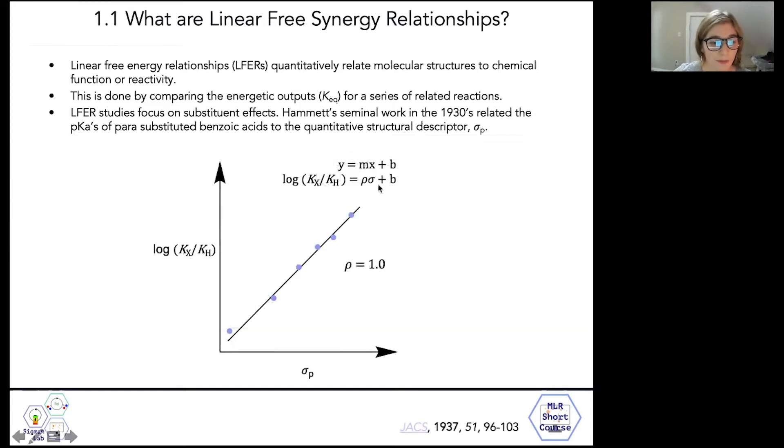Hammett measured all of these different acidity constants and related the pKa's of the parasubstituted benzoic acids to sigma para using a line of the form Y equals MX plus B, where our dependent variable of interest is the log of the ratio of equilibrium constants, and sigma is our independent variable. Hammett termed the slope of this line rho, and in the case of the ionization of benzoic acids, rho is equal to one.